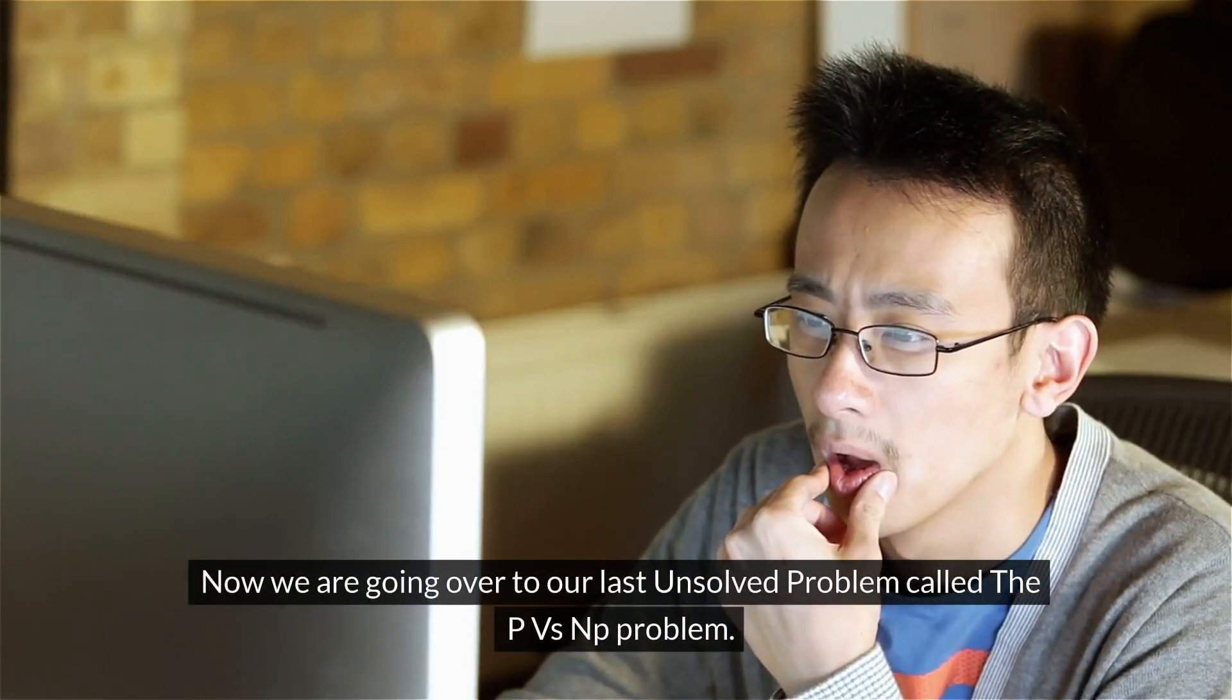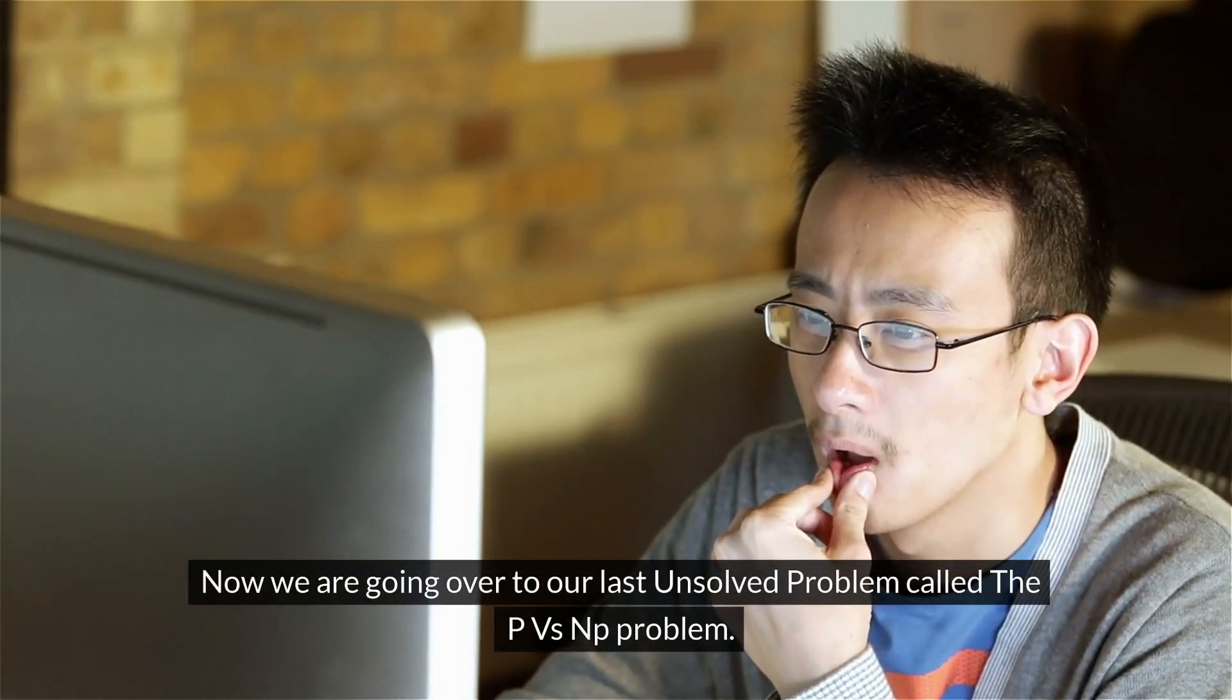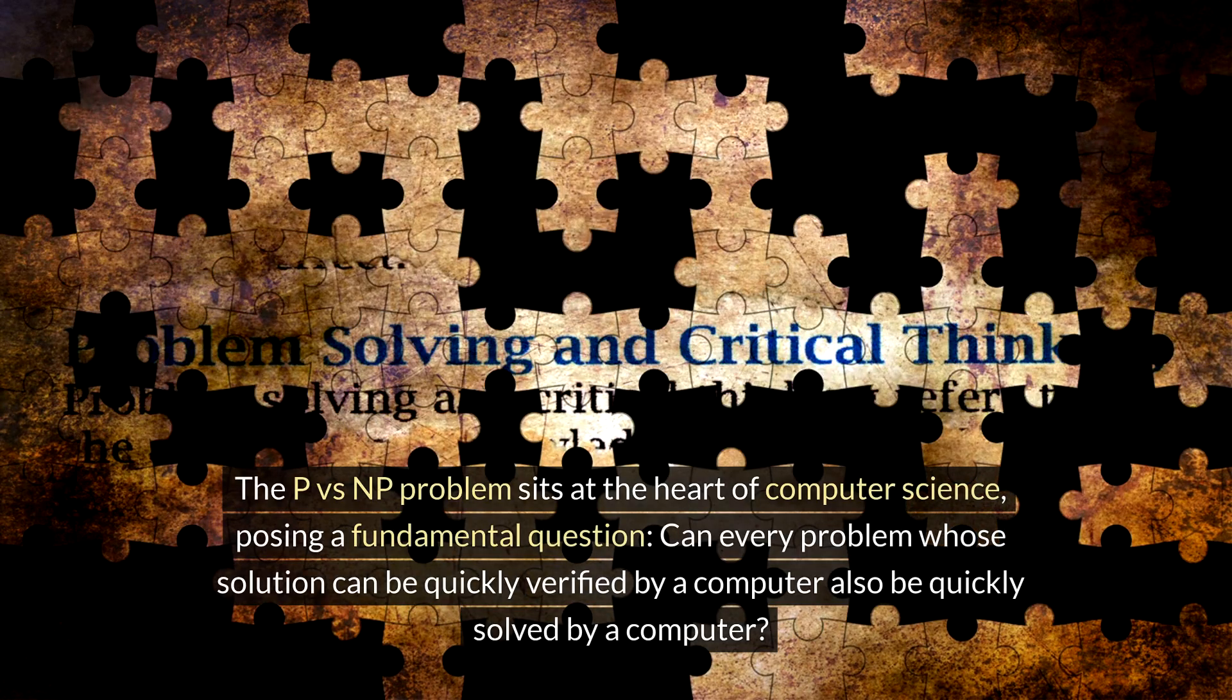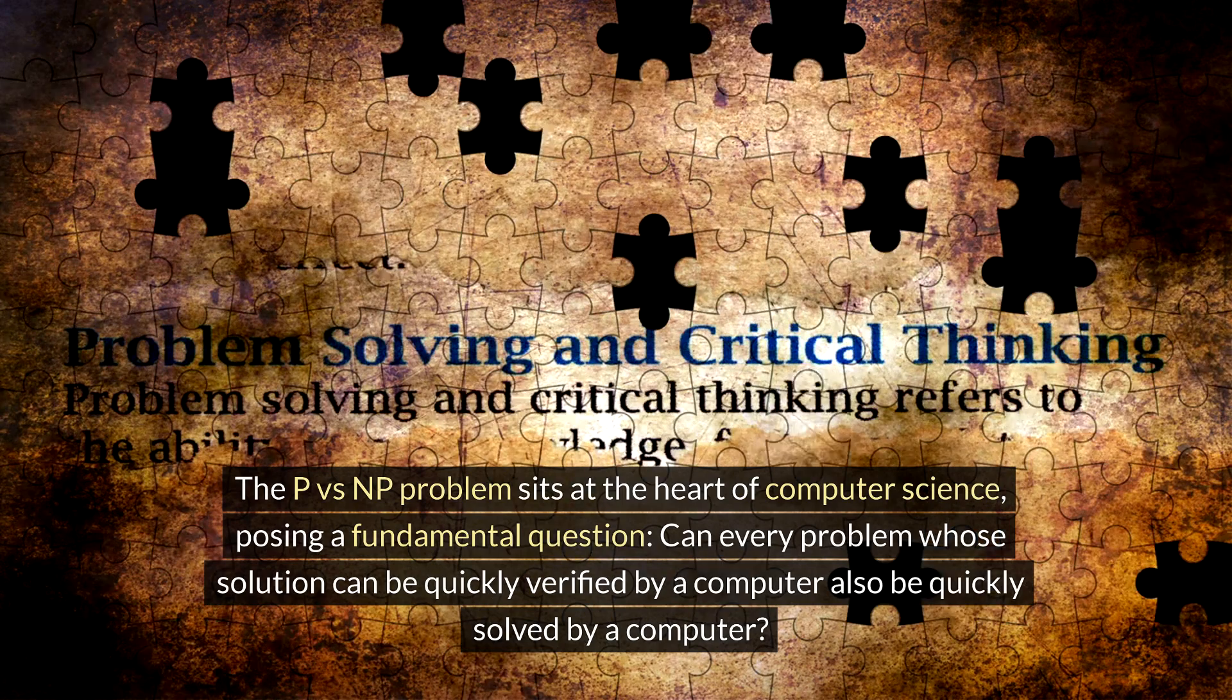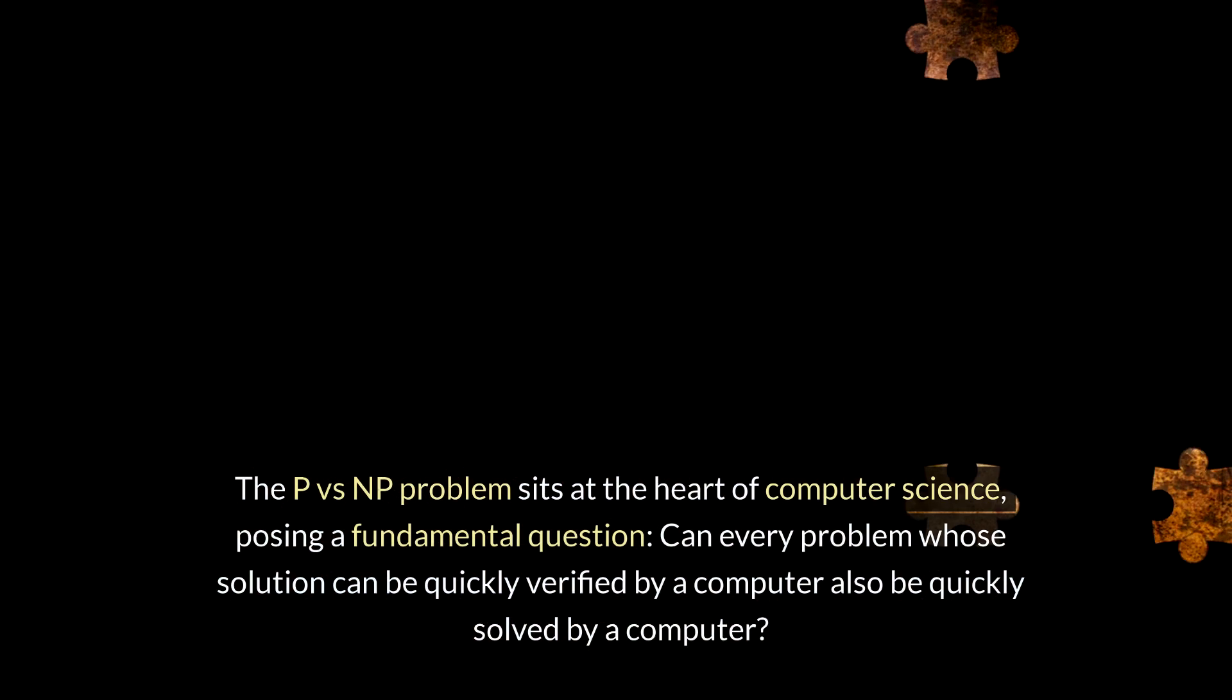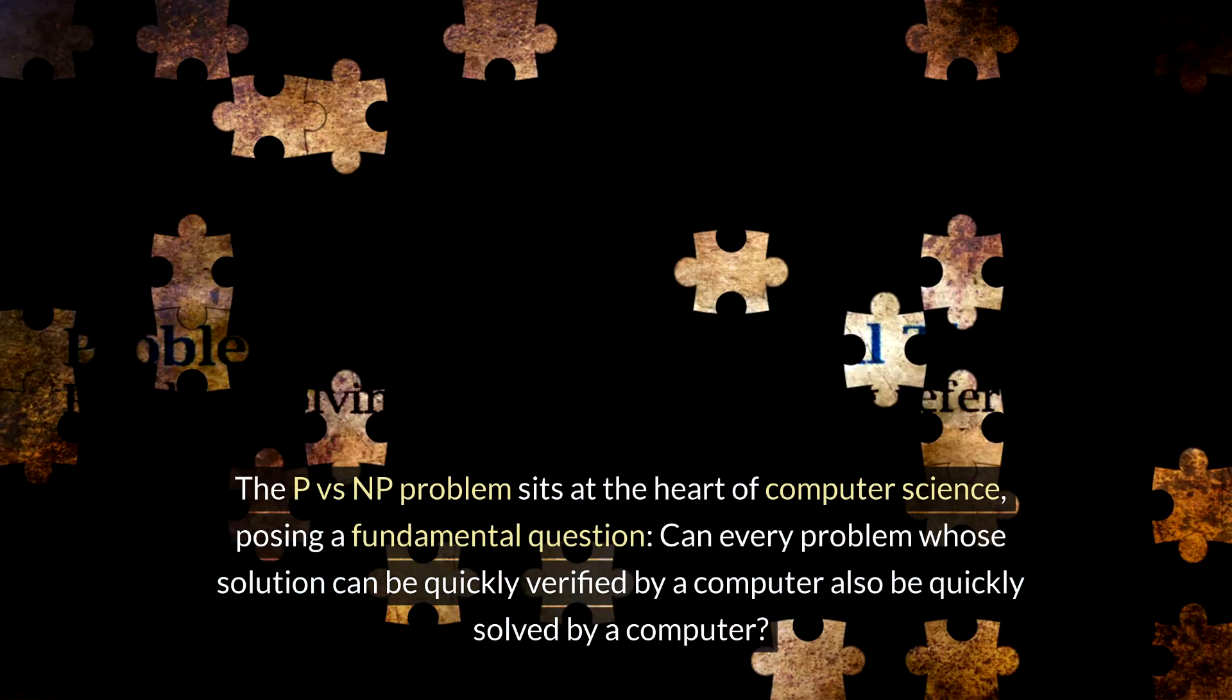Now we are going over to our last unsolved problem called the P versus NP problem. The P versus NP problem sits at the heart of computer science, posing a fundamental question: Can every problem whose solution can be quickly verified by a computer also be quickly solved by a computer?